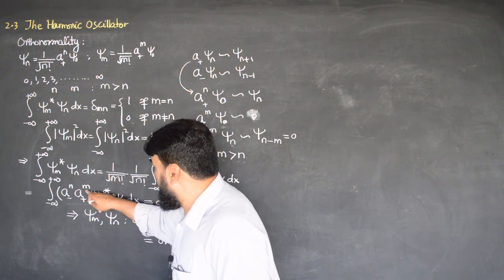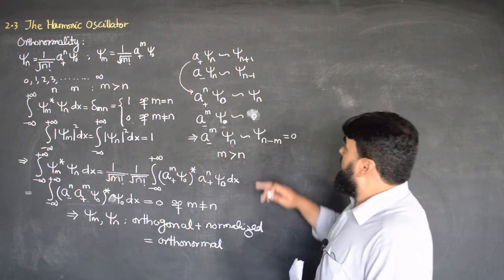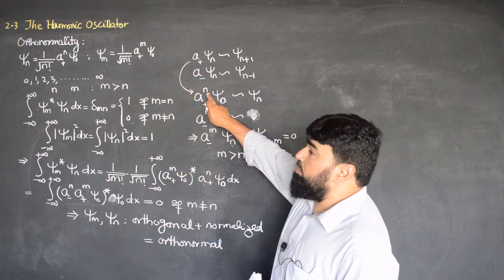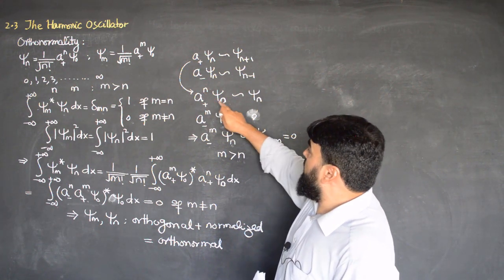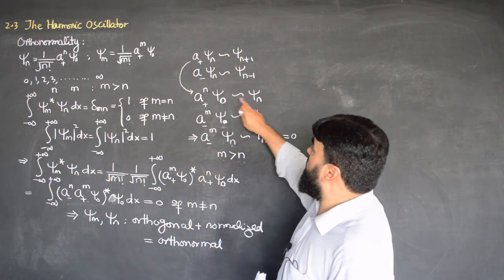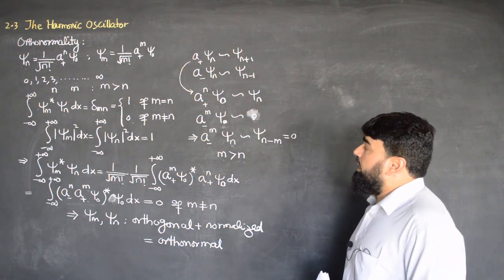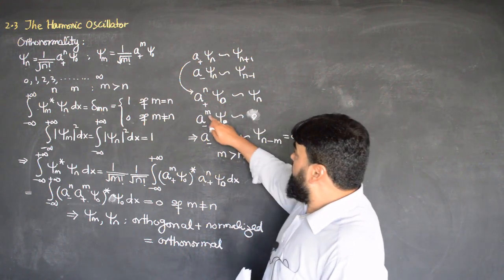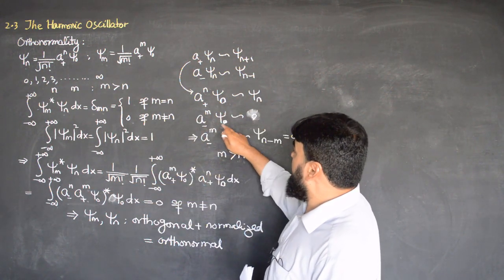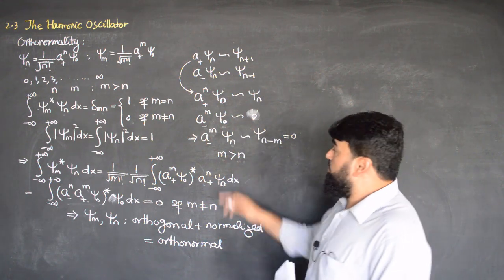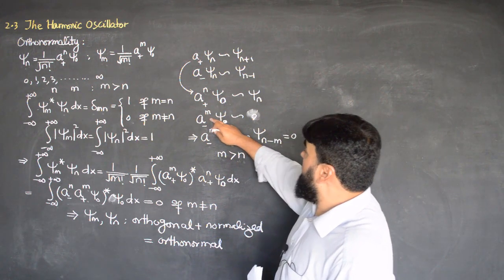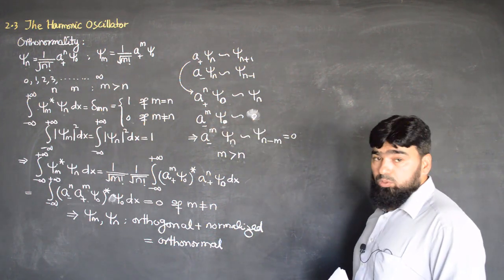So a-plus is operating on psi_0. When a-plus operates on psi_0, n may be any number. For n equal to 1 we get psi_1, then n equal to 2 gives psi_2, and so on — a-plus to the n-th power gives psi_n. Now a-minus is an operator which reduces the state. So a-minus on psi_0 gives 0 because psi_0 is the ground state, and any higher power of a-minus will also make the expression equal to 0.